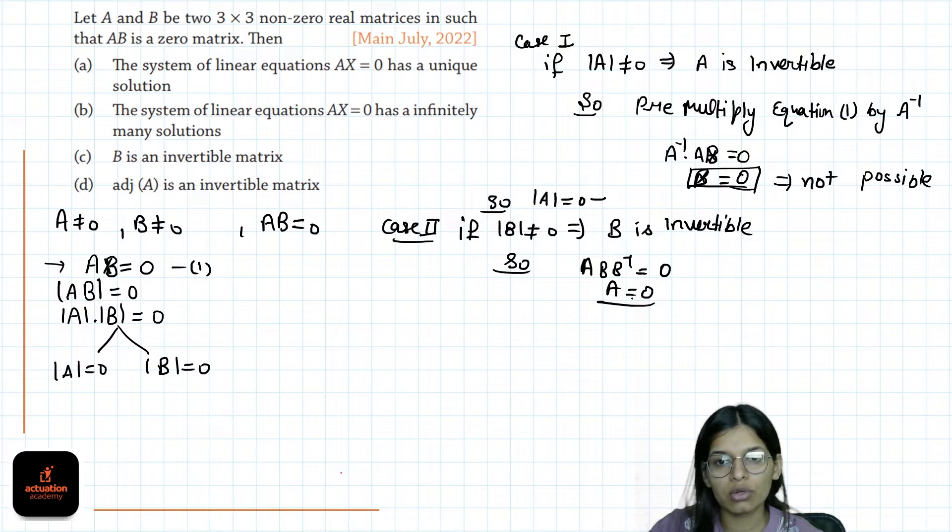A equals 0, which is not possible. So this will imply determinant of B is 0.